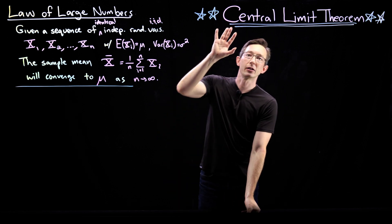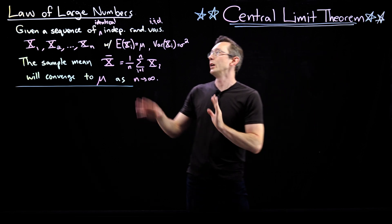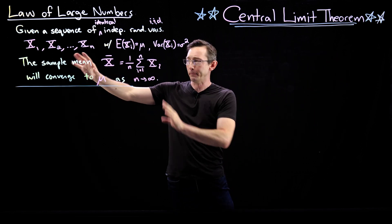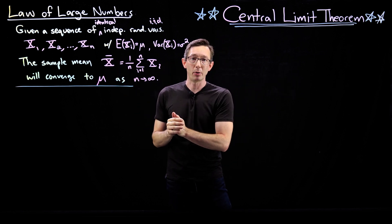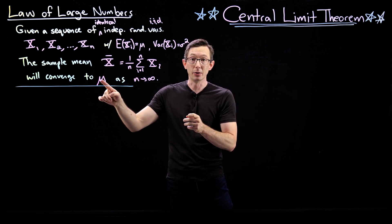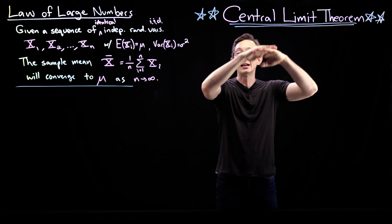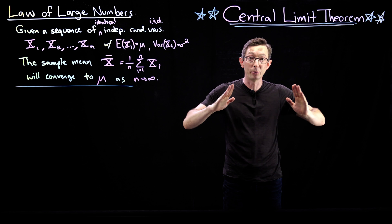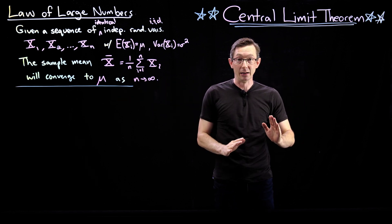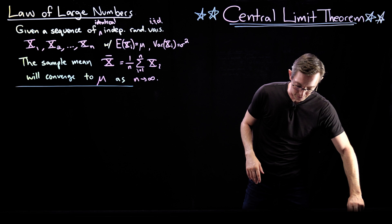Okay, now the central limit theorem is more powerful. It's a more powerful result and it's much more useful. What it says, it's the same basic idea. It says that this sample mean x bar converges to mu, but specifically that it is distributed as a normally distributed random variable with a calculable variance and mean. So it says, I'll actually just write down what the central limit theorem says here, maybe in yellow.